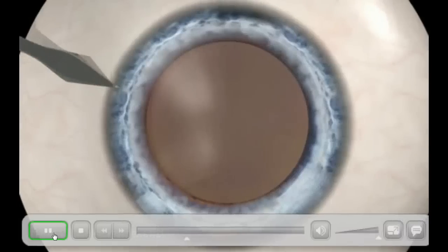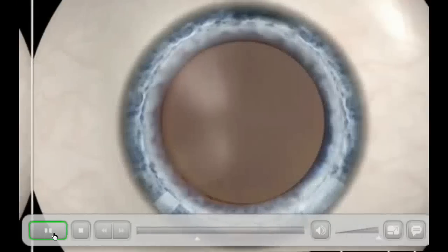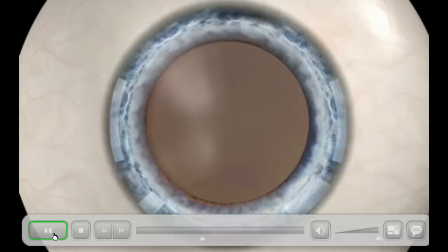If the patient has astigmatism, traditional cataract surgery requires a blade to create arc-line incisions in the outer margins of the cornea to correct the astigmatism. While with bladeless laser cataract surgery, these incisions are performed with the laser.